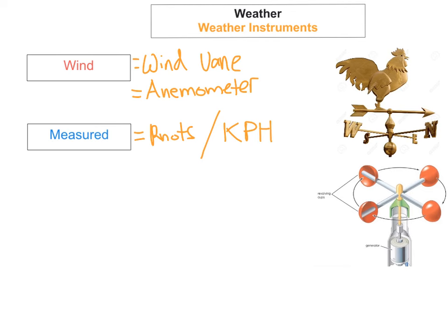So the two instruments you need to know are the wind vane and the anemometer. The wind vane measures the direction the wind is coming from, and the anemometer measures the speed, expressed in knots or kilometres per hour.